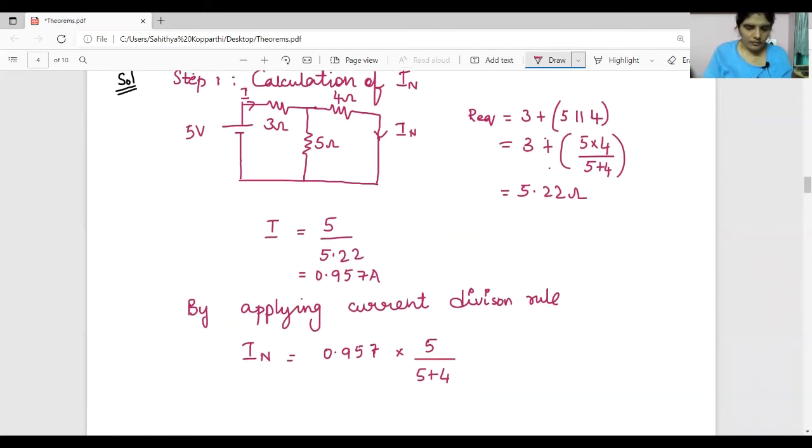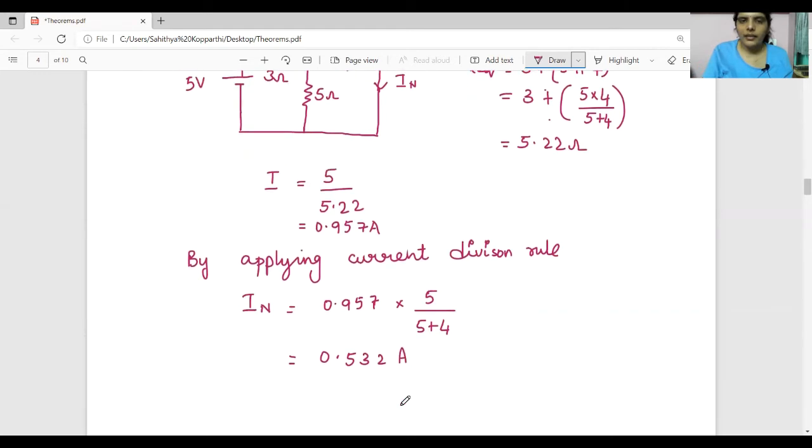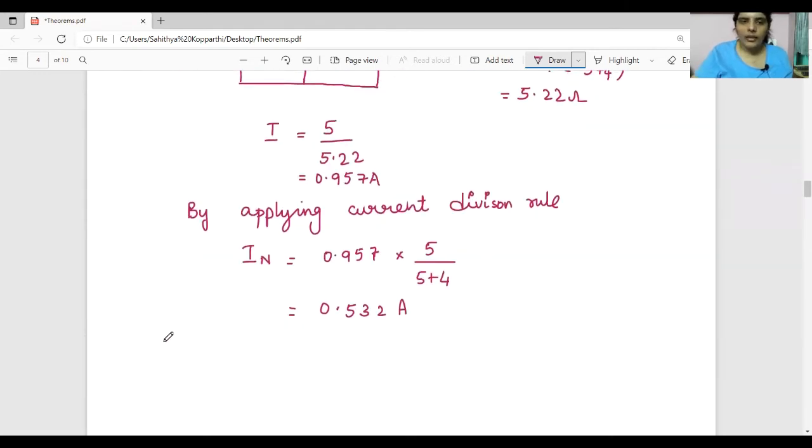So it is 0.532 ampere, which is the Norton's current. Now calculate Norton's resistance.